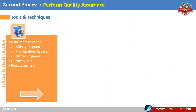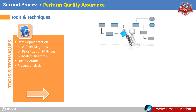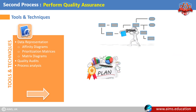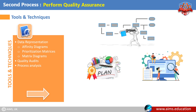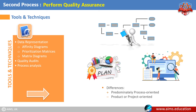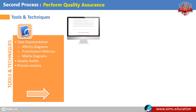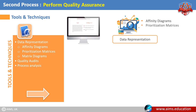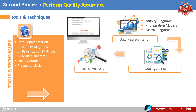Tools and Techniques for Perform Quality Assurance: The same tools and techniques of Plan Quality Management and Control Quality can help in this process. The difference is that they are predominantly process-oriented rather than product or project-oriented. Additional quality management tools used include Affinity Diagrams, Prioritization Matrices, Matrix Diagrams, Quality Audits, and Process Analysis.